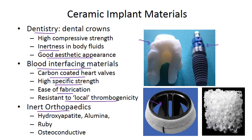Another application is in inert orthopedics. The types used in orthopedic implants include hydroxyapatite — which you can see here looks spongy like bone — and alumina, which is very hard. They are osteoconductive, meaning they conduct the growth of bone during bone regeneration, making them very good for bone grafting materials.